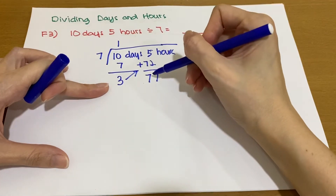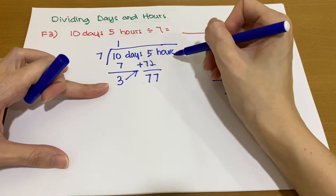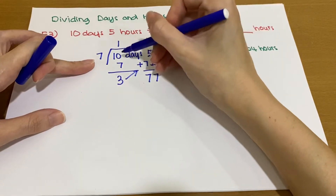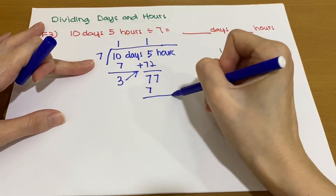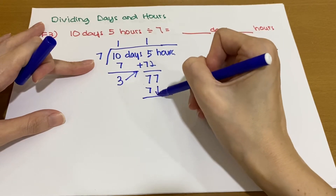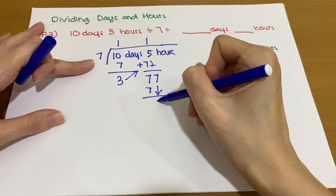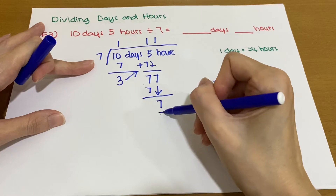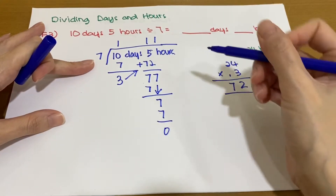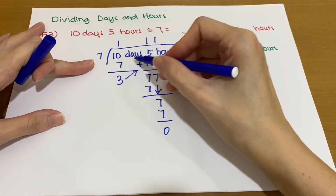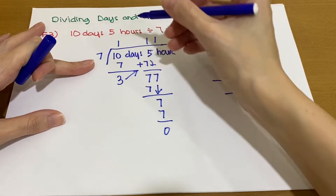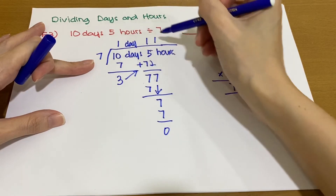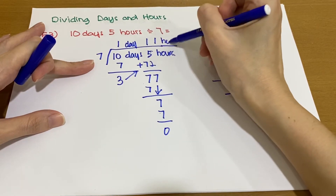So we have 77 hours divided by 7: 1 × 7 = 7, balance 0; bring down the 7; 1 × 7 = 7, balance 0. So 10 days 5 hours divided by 7 gives us 1 day and 11 hours.